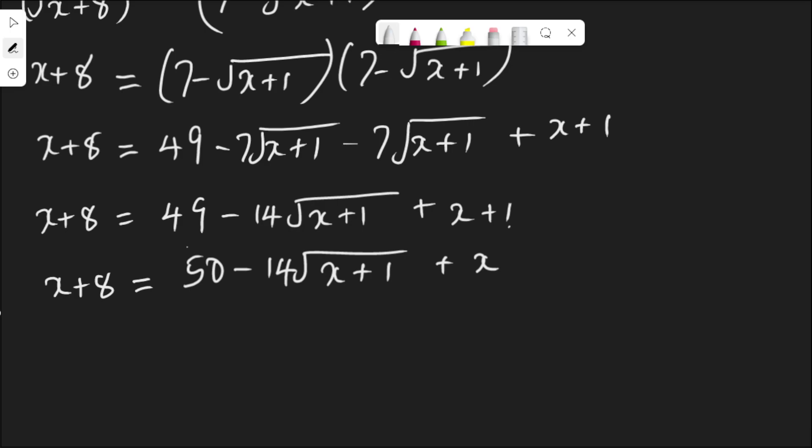Collecting like terms again, this x and this x, let's bring it together. x plus 8 minus x minus 50 equal to negative 14 root x plus 1. x minus x is gone. 8 minus 50 is negative 42 equal to negative 14 root x plus 1.